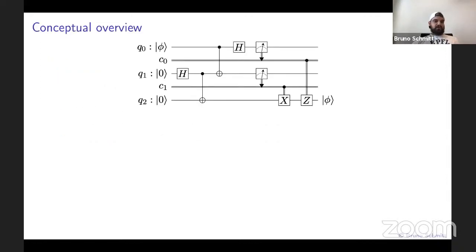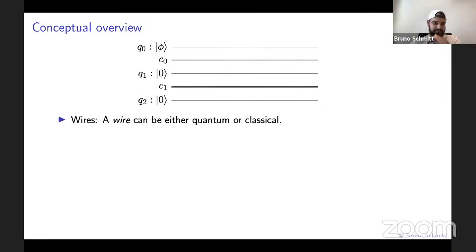Let's start with the concept overview. I will use this simple circuit diagram to illustrate the concepts used in Tweedledum. These lines in the diagrams are called wires. A wire can be either quantum or classical. In Tweedledum, a quantum wire is equivalent to a qubit, represented by single lines. Similarly, a classical wire is equivalent to a classical bit, represented by double lines.